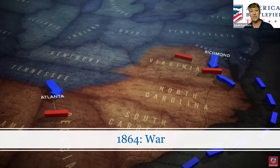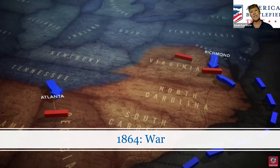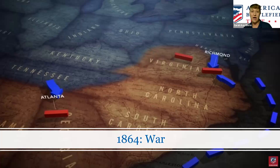In 1863, the Confederacy was cut in two as the Mississippi River came under control of Union forces following the capture of Vicksburg, Mississippi in the summer of 1863. Also that summer, the Battle of Gettysburg took place, seen as one of the large turning points of the Civil War. Now into 1864, with a divided nation years into conflict, we begin to see coordinated efforts of Union armies plunging deep into Confederate territory. The end of the war does not come until 1865.